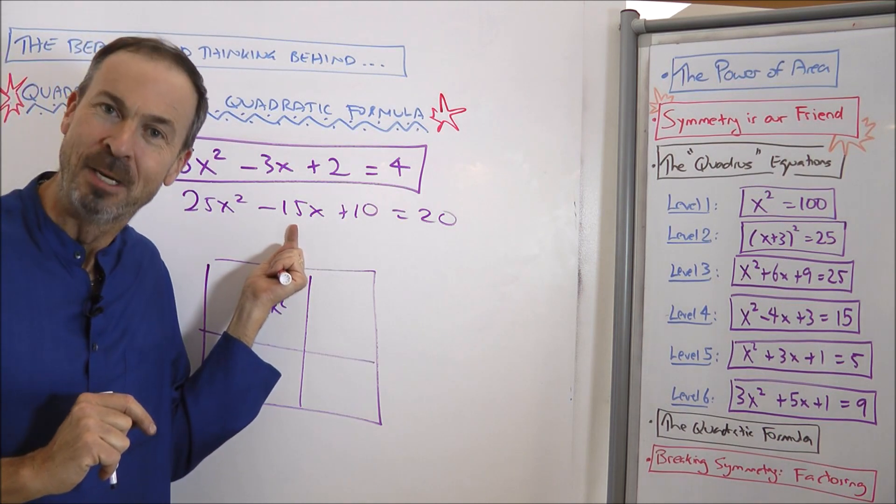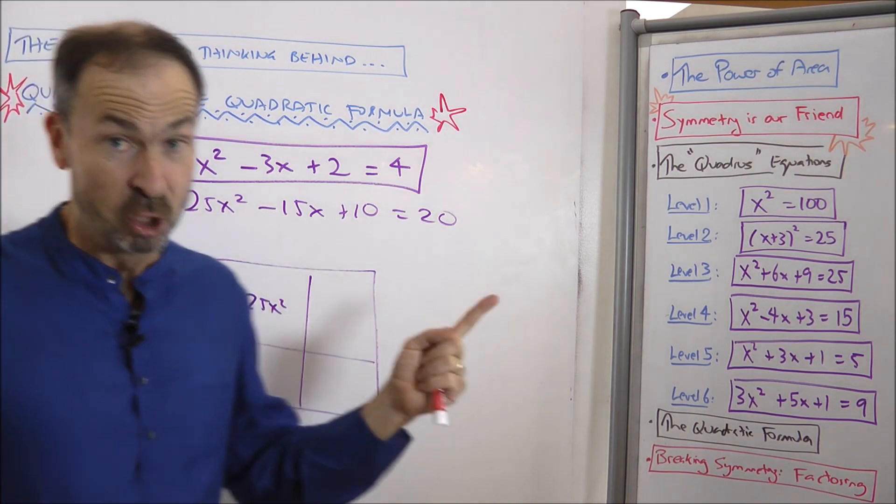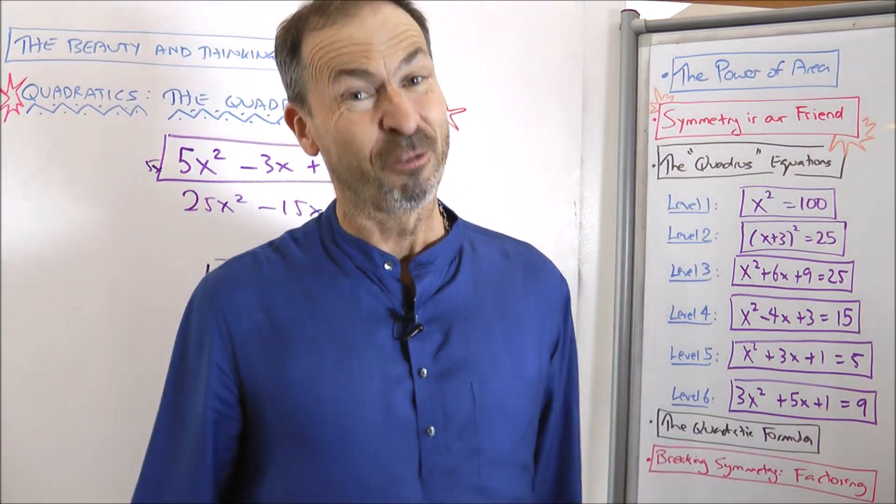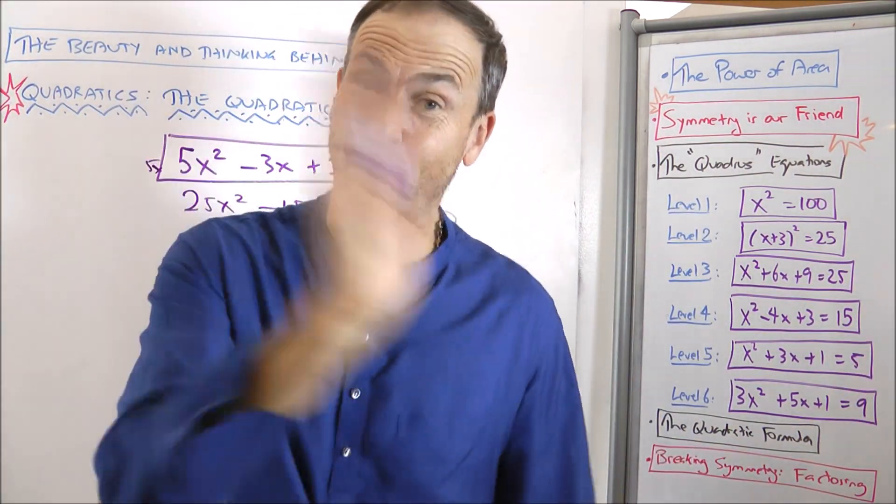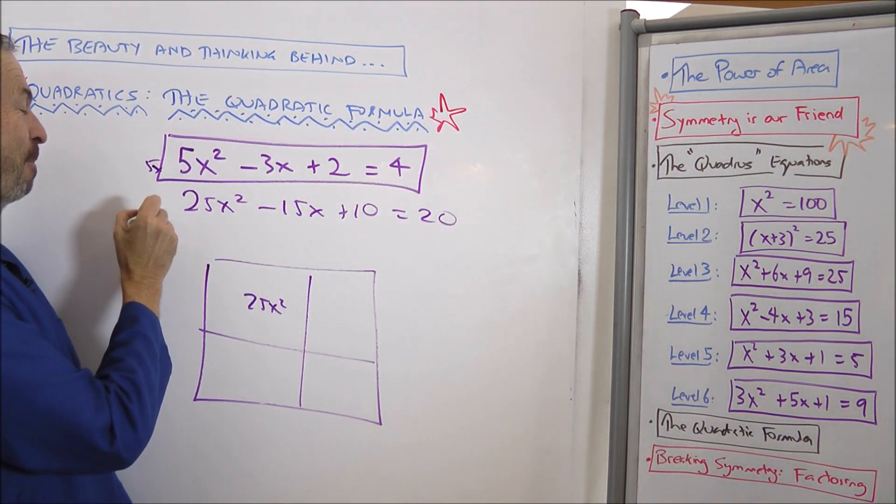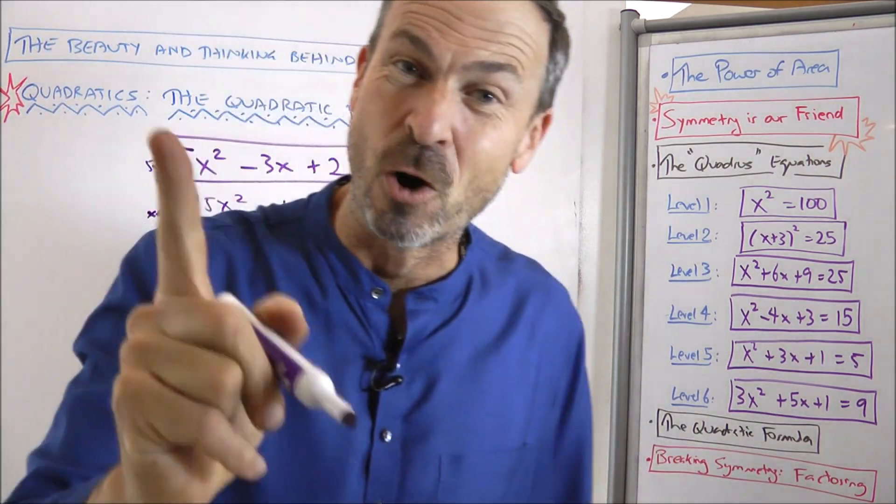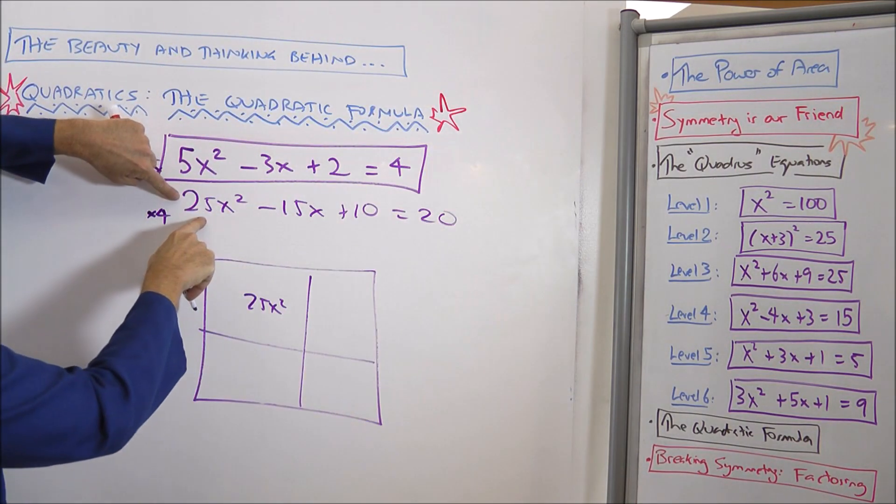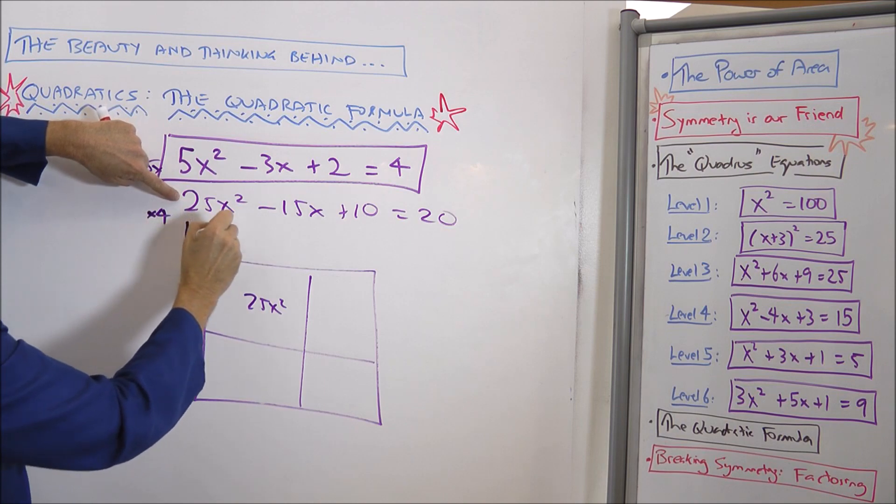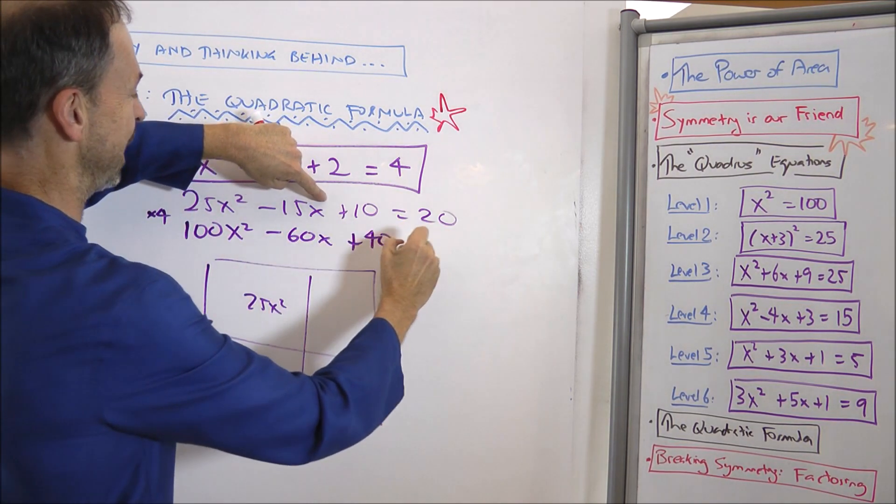If I do that, I'll get 25x squared minus 15x plus 10 equals 20. And now I have a lovely piece 25x squared there. Except this puzzle has an annoying feature to it. Namely, it's got an odd middle number, which means I want negative 7.5 and negative 7.5. Now I can do it, I can make it work, but fractions are difficult to work with. I'm going to avoid fractions. And the way we did that last time was actually multiply now by 4.